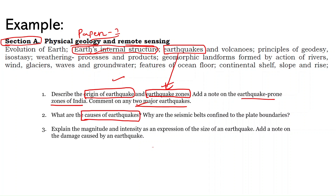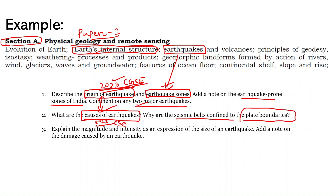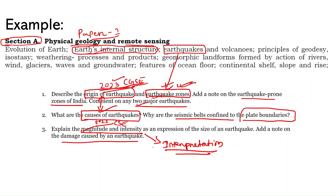This confirms that CSE questions repeat in CGSE. 'Causes of earthquake' asked in CSE 2022 is the same as 'origin of earthquake' asked in CGSE 2023 — so keep this in mind. Further dimensions extracted from PYQs: seismic zones confined to plate boundaries (linking causes to plate tectonics), magnitude and intensity (how earthquakes are interpreted and measured), and damage caused by earthquakes (effects). These dimensions need to be incorporated in your notes.